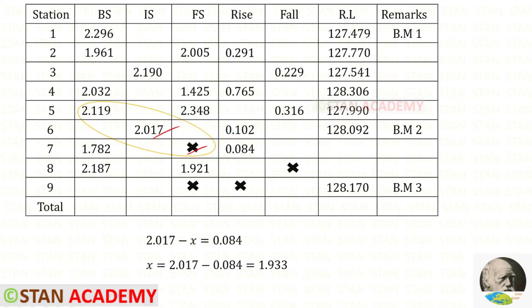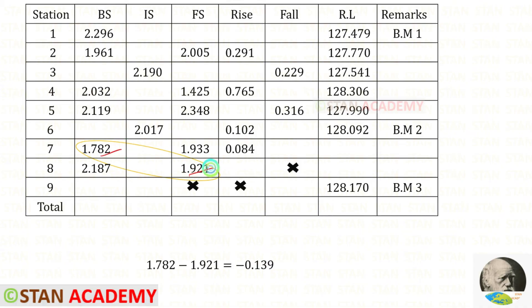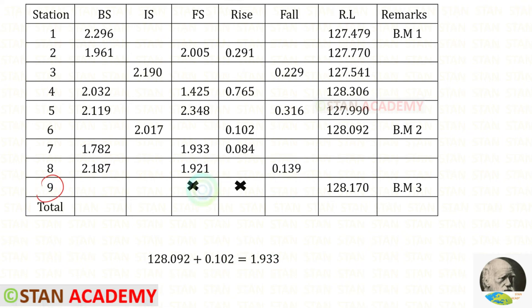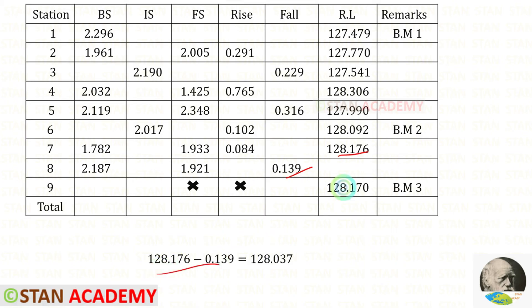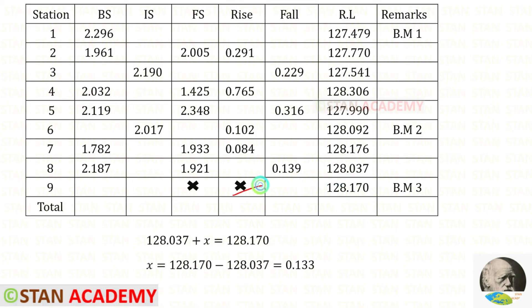This minus this also, we will get positive 0.084. Using that we can find x. Then we need to take from this back sight to this fore sight. This minus this, we will get a negative value, so that should be fall. In station number 9, we have two unknowns, so we can't proceed here. First we need to find these two reduced levels. This reduced level plus this rise will give us this reduced level. Then this reduced level minus this fall will give us this reduced level. Here we have rise, so this plus this will give us this reduced level. Using that concept, we can find x.